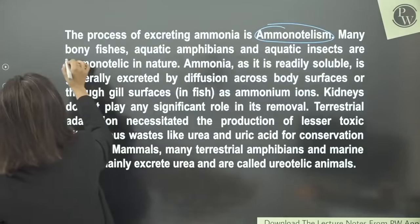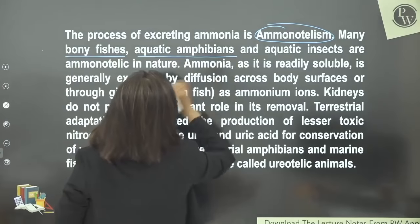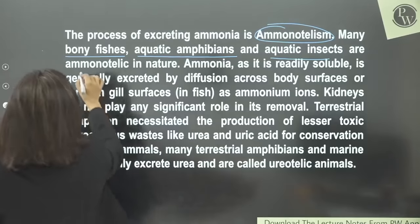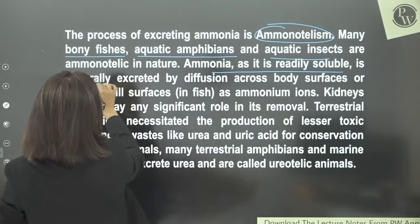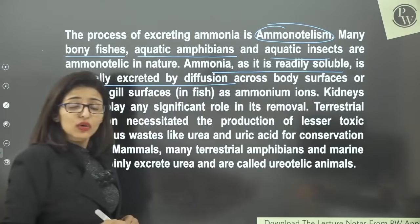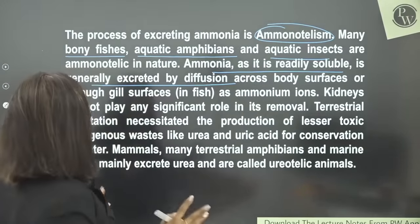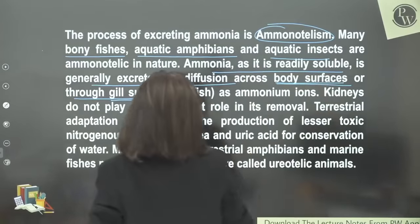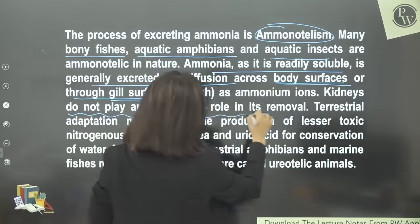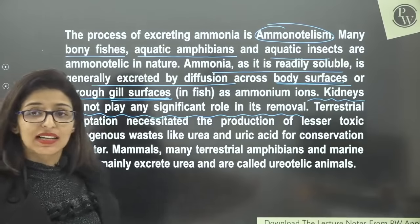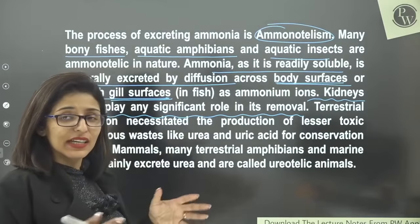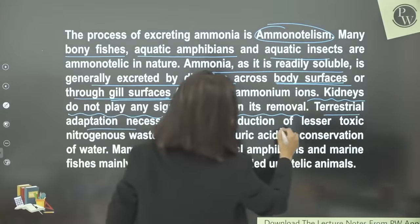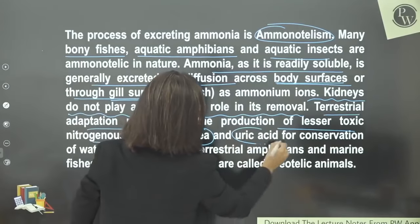Every example in NCRT is super important. Ammonia is readily soluble in water and generally excreted by diffusion. In this case, kidneys don't play a significant role — it happens through body surface or gill surface as ammonium ions. Kidneys do not play a significant role in its removal. Organisms that moved to land needed an excretory product that uses less water — terrestrial adaptation. This was the production of lesser toxic nitrogenous waste like urea and uric acid for conservation of water. Examples: mammals, many terrestrial amphibians like frogs, and marine fishes — they excrete urea and are called ureotelic.